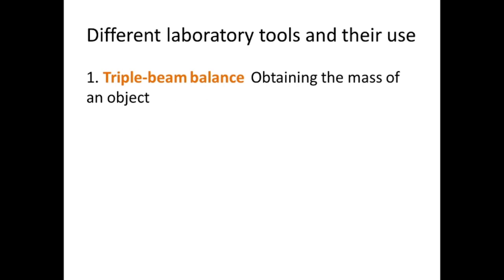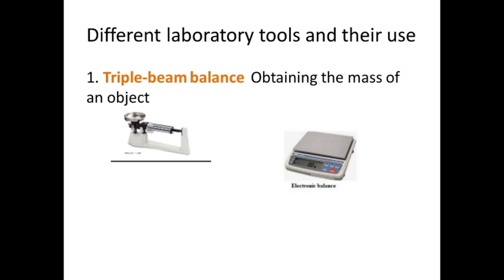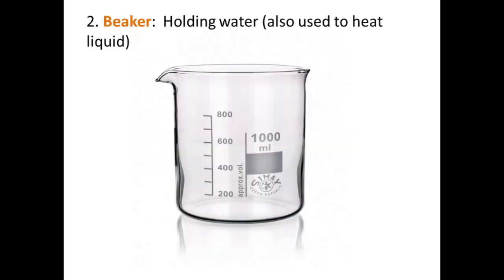The first laboratory tool is the triple beam balance, which is used to measure the mass of an object. The second one is the beaker, used for holding water and also used to heat liquid.